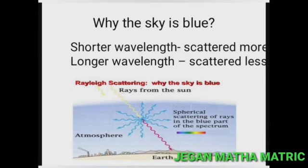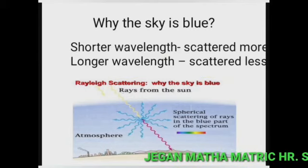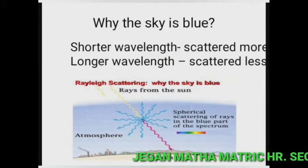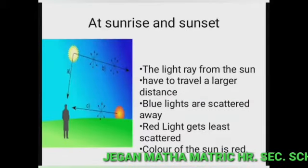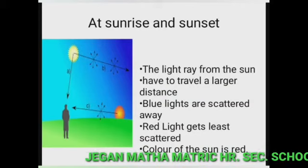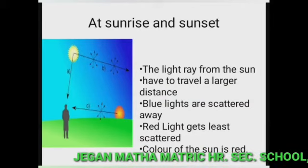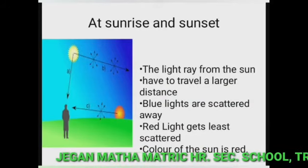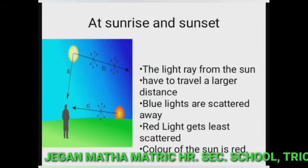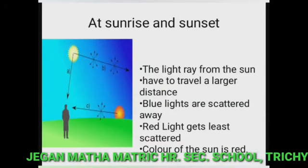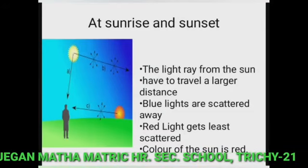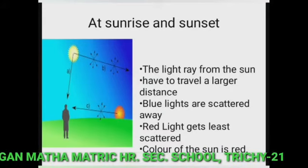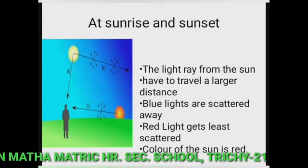The color with the longer wavelength is scattered less. At sunrise and sunset, the light rays from the sun have to travel a larger distance in the atmosphere than at noon. Hence most of the blue light is scattered away, and only the red light, which gets least scattered, reaches us. Therefore the color of the sun appears red at sunrise and sunset.